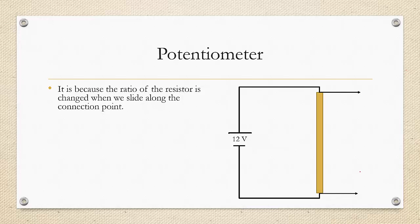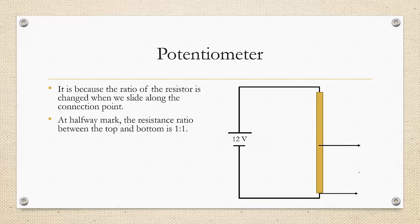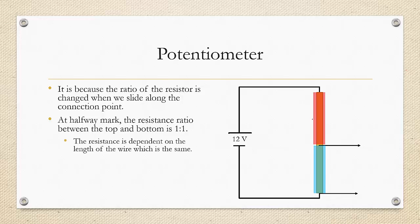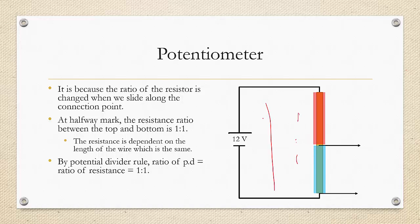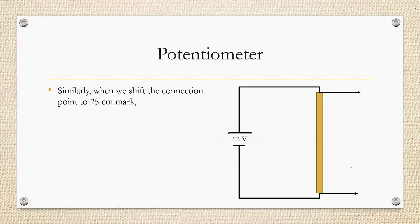This works because the ratio of the resistance changes as we slide the connection point. At the halfway mark, the resistance ratio between the top and bottom sections is 1 to 1 — the wire lengths are equal, and resistance depends on length. By the potential divider rule, the ratio of potential difference equals the ratio of resistance, which is 1 to 1. Since the total is 12 volts, each section is 6 volts, so the output voltage is 6 volts.